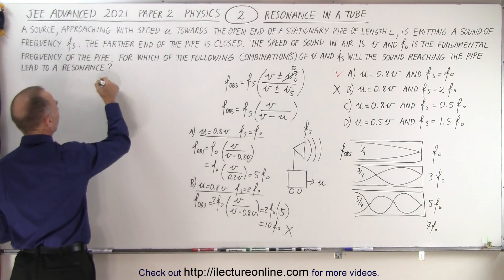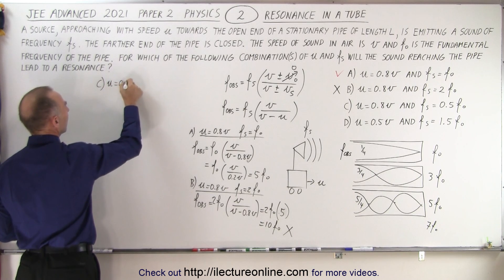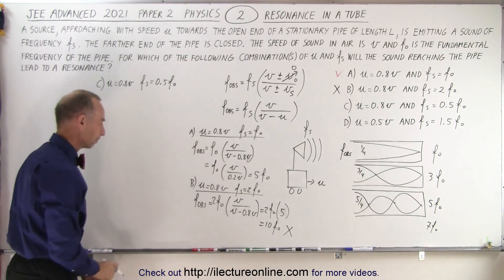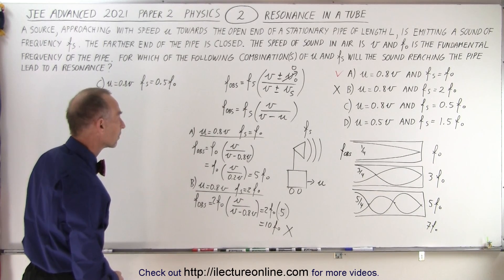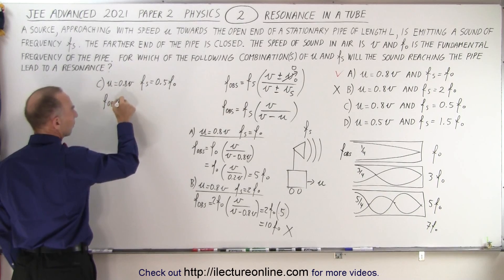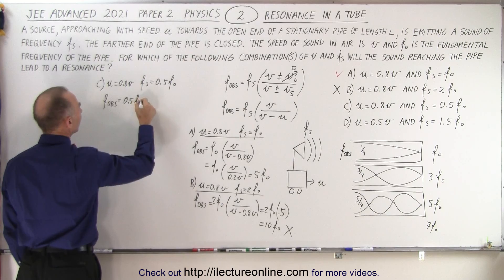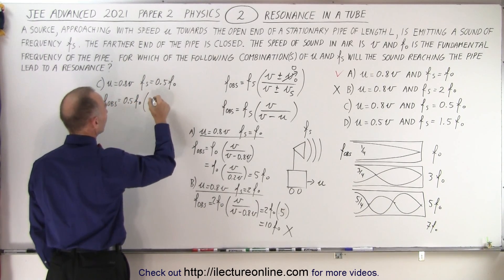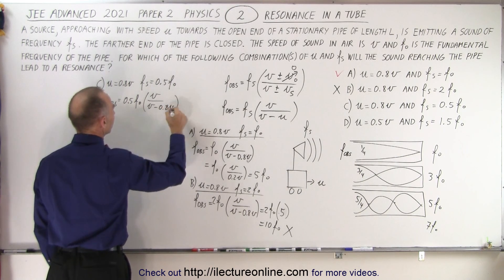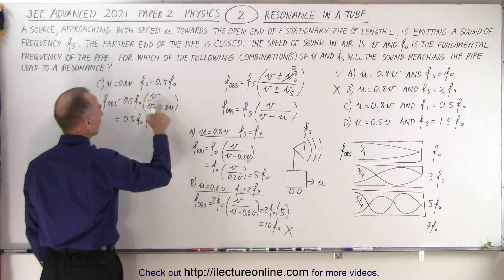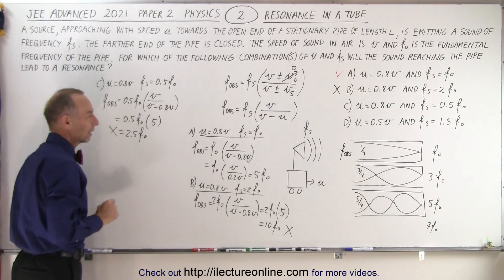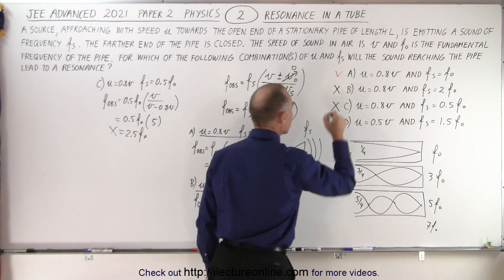For answer C: u equals 0.8v and f sub s equals 0.5 times the fundamental frequency. So f observed equals 0.5f sub nought times v divided by (v minus 0.8v), which equals 0.5f sub nought times v divided by 0.2v, that's 0.5f sub nought times 5, giving 2.5 times the fundamental frequency. That's not going to give us a resonance frequency either.